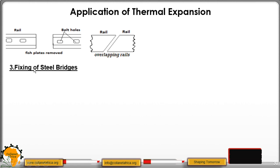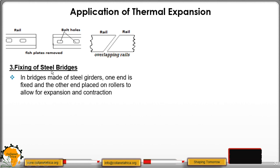Then we have the fixing of steel bridges. As you can see in our diagram, when the steel bridges are being constructed, we have the steel girders. On one side these are fixed, but on the other side these girders are lying on rollers. This is what we call the free head, and these rollers are allowing for expansion and contraction.